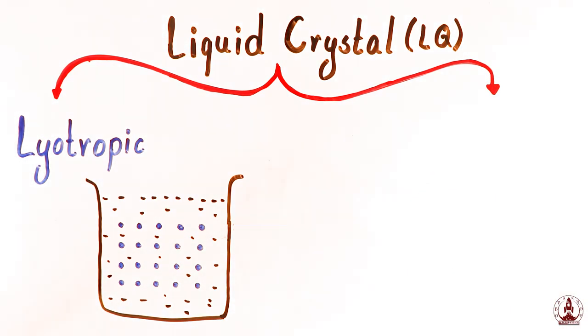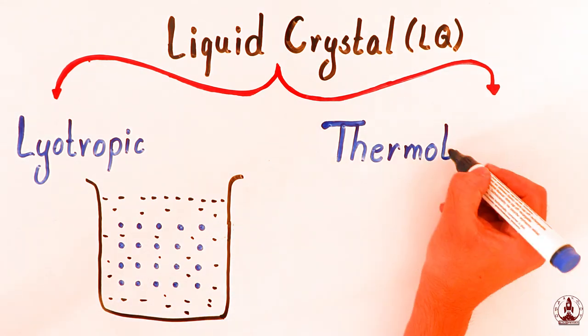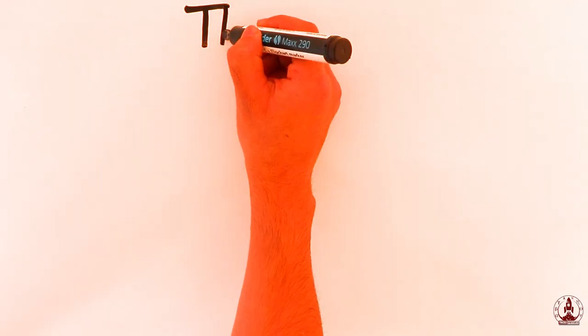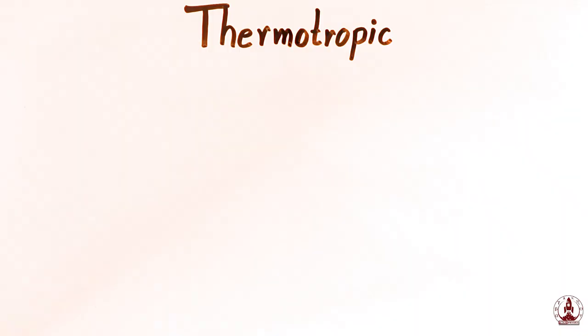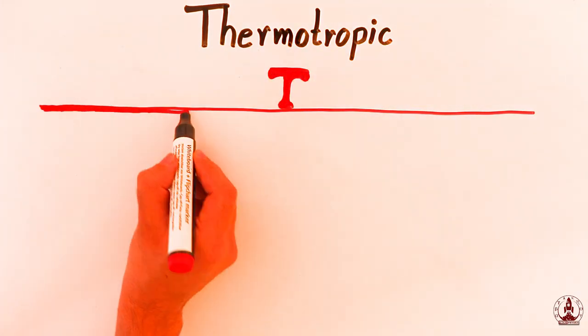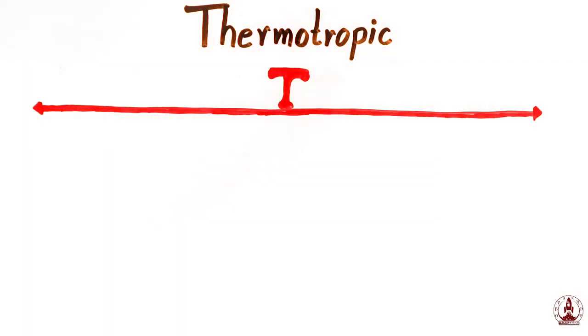Second type of liquid crystal goes with another technical jargon name, thermotropic. What are they? It might need a bit of room here, so let's start a clear screen to define the thermotropic liquid crystal. The word thermo in thermotropic gives you a sense that it is related with temperature. So, let's draw a temperature line, from lower temperature to way up to higher temperature.